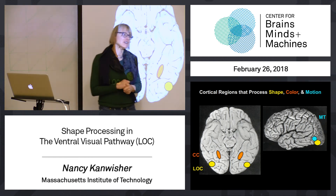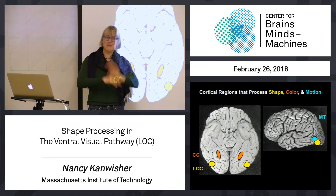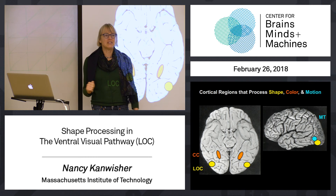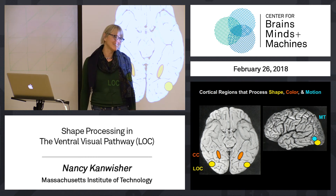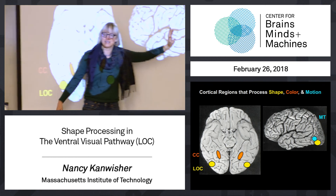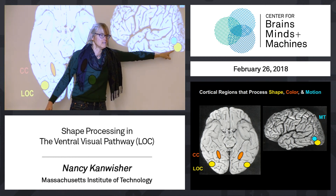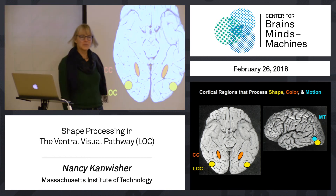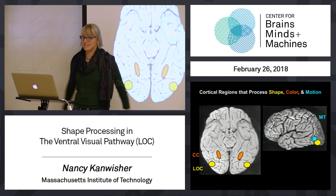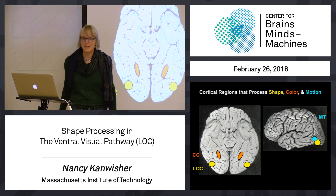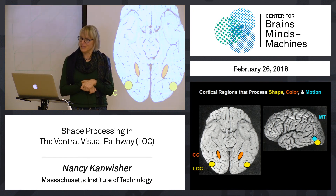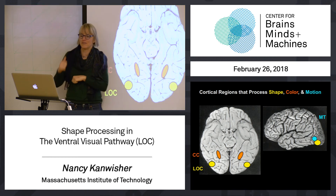With TMS applied to area MT, the effects tend to be subtle — accuracy in judging motion direction might go from 78% correct to 75% correct. Effect sizes are tiny but still meaningful. So that's evidence for MT in motion. LO is involved in shape perception. On Wednesday, Rosa will present evidence that a region near these is involved in processing color information. So there's clearly some division of labor for mid-level features of motion, shape, and color — though each region is a messy, rough-edged area rather than a neat oval.